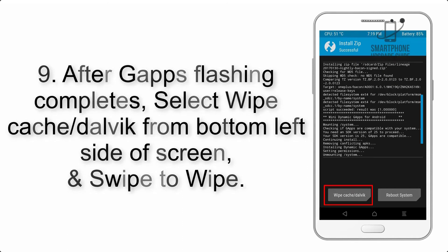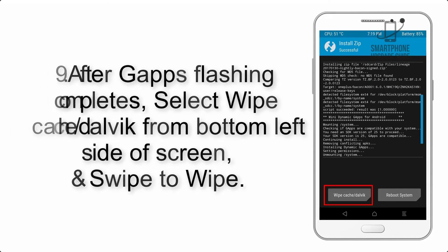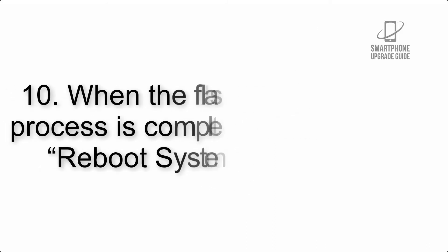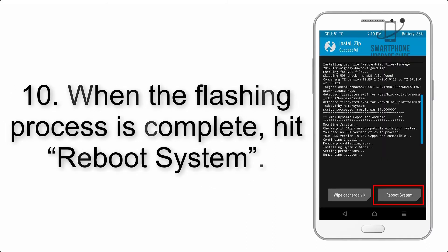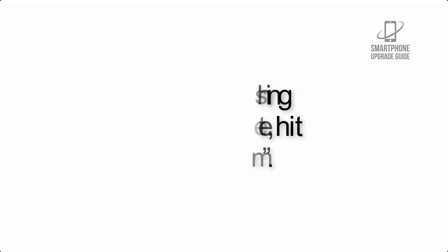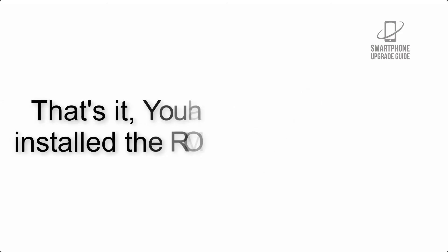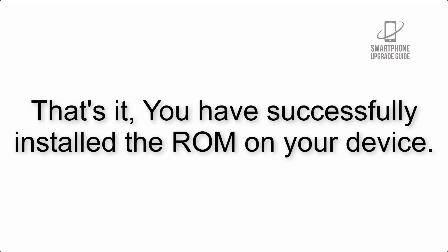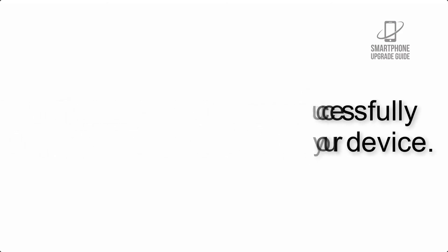Step 8: Flash the gapps zip package in the same manner. Step 9: After gapps flashing completes, select Wipe Cache and Dalvik from the bottom left side of the screen and swipe to wipe. Step 10: When the flashing process is complete, hit Reboot System. That's it — you have successfully installed the ROM on your device.